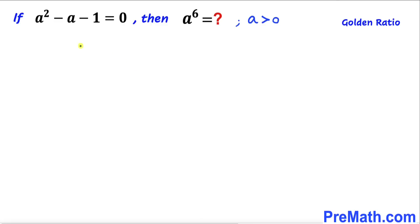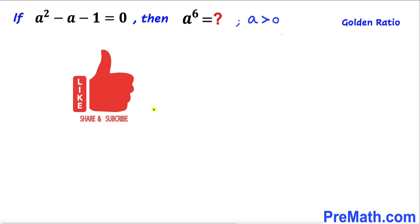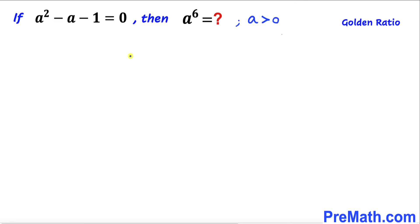Welcome to Pre-Math. In this video we have got the quadratic equation a² - a - 1 = 0, and we are going to find the value of a⁶, with the condition that a is greater than 0. Please don't forget to give a thumbs up and subscribe. Let's go ahead and get started with the solution.